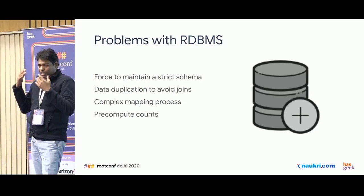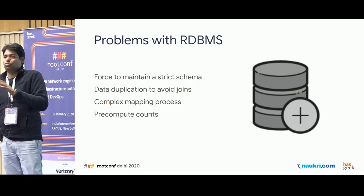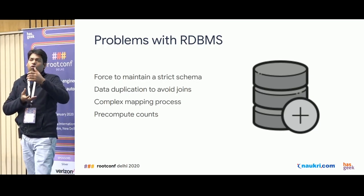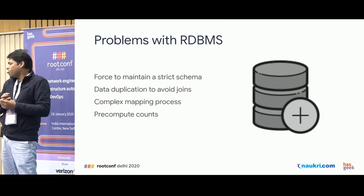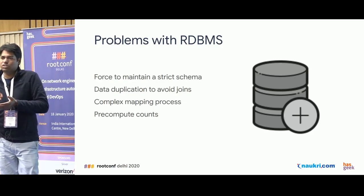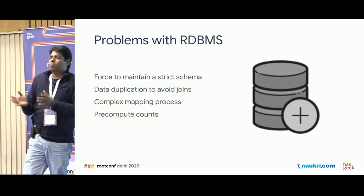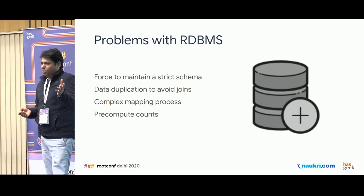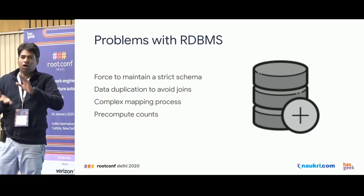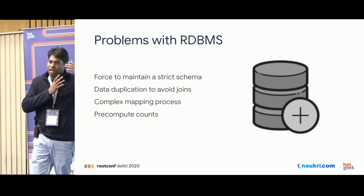Every time you try to access information from the parent table, you have to join this mapping table and the related table to get the complete data set. We also tend to pre-compute counts in the DBMS because counts are used for filters and sorting, and that pre-computation is done through application logic — meaning we have to maintain that logic somewhere in our application.